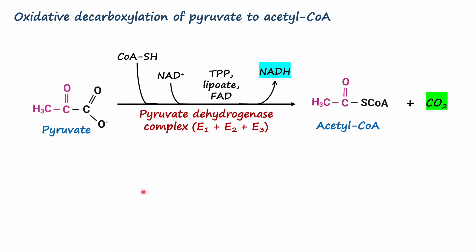This is the overall reaction of oxidative decarboxylation of pyruvate to acetyl-CoA. Pyruvate is first decarboxylated into carbon dioxide, and then following the oxidation reaction it is converted into acetyl-CoA. This reaction is carried out by pyruvate dehydrogenase complex, which requires five different coenzymes: thiamine pyrophosphate, lipoic acid, FAD, NAD+, and coenzyme A. In the process, it also generates one molecule of NADH.